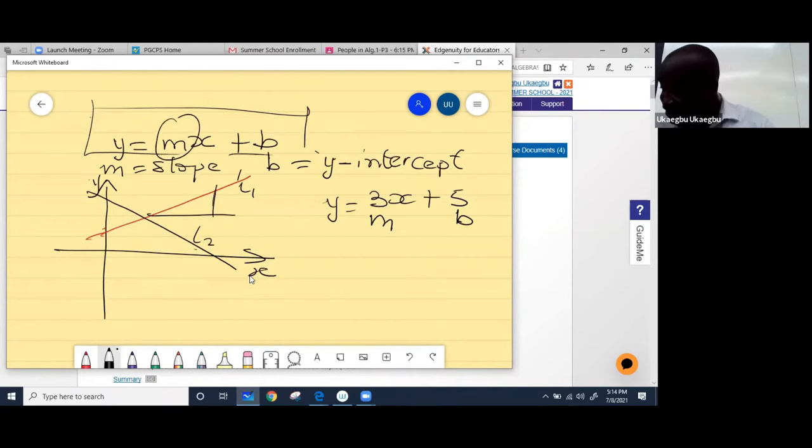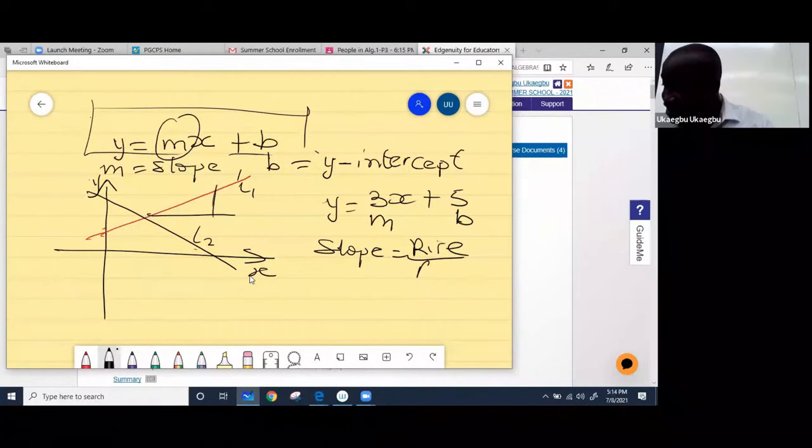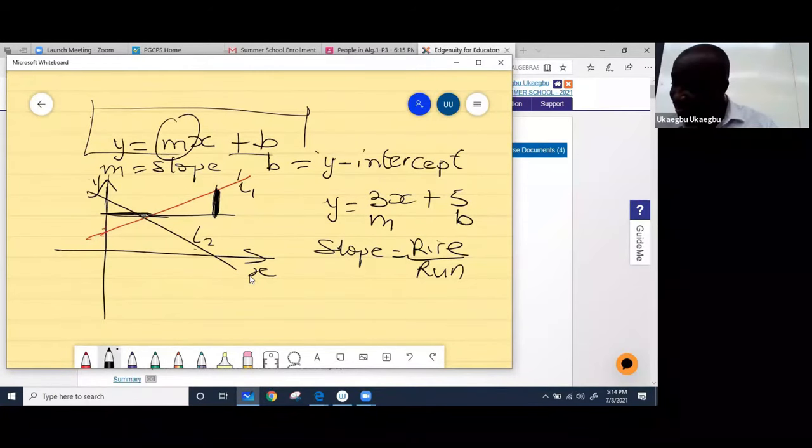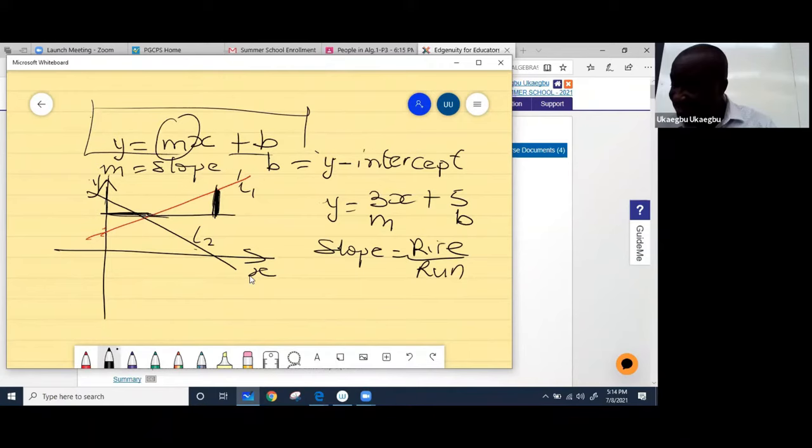So it means if you take the slope of this line, which is slope is also defined as rise over run. Rise means the distance from the vertical axis all the way to the top, and run is that of the horizontal axis. So this is the run, this is the rise. So if you take the slope of rise over run it's going to give you three. And then this five is the place where the line crosses the y-axis. So that's the y-intercept.